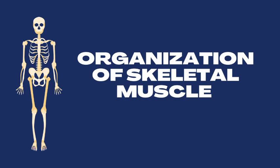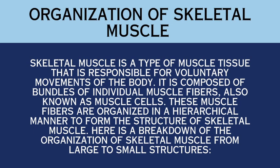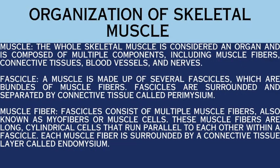The next topic is organization of skeletal muscle. Skeletal muscle is a type of muscle tissue responsible for voluntary movements of the body. It is composed of bundles of individual muscle fibers, also known as muscle cells, organized in a hierarchical manner. Here is a breakdown from large to small structures. First, the whole skeletal muscle is an organ composed of muscle fibers, connective tissues, blood vessels, and nerves. Second, a muscle is made up of several fascicles — bundles of muscle fibers — surrounded by connective tissue called perimysium.